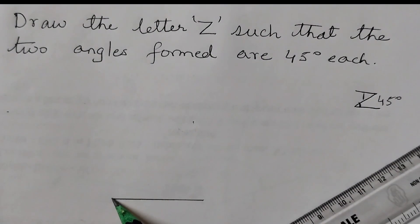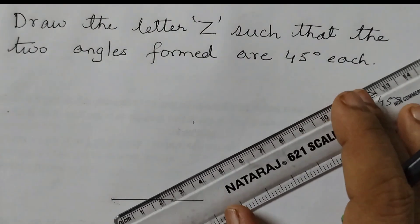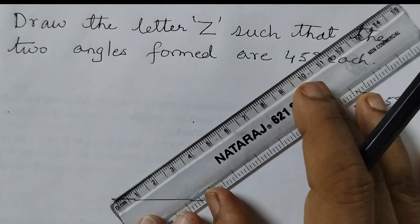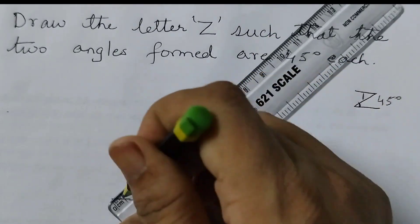Now this measurement from this point to this point, I am going to take it as 5.7 cm so that our Z looks proper. So this is about 5.7 cm.